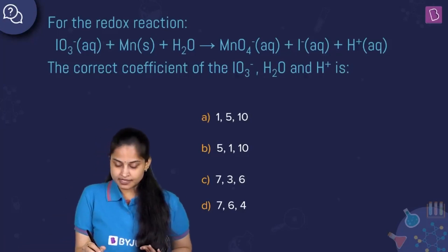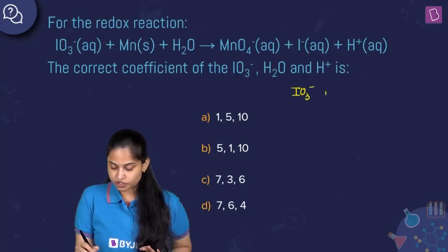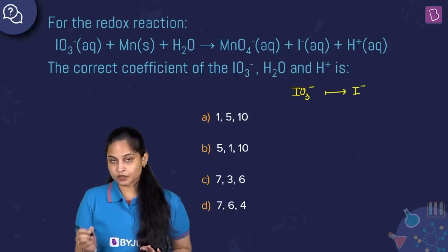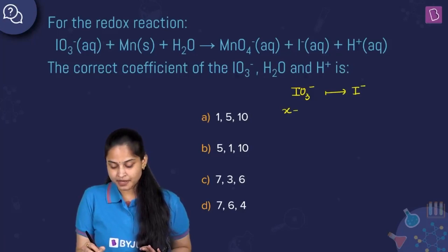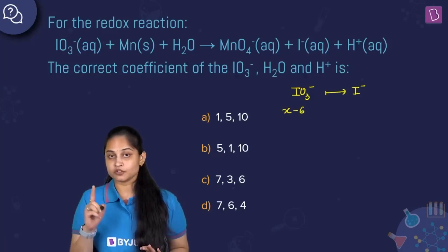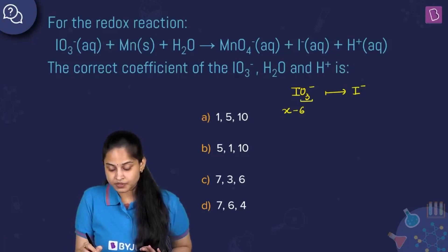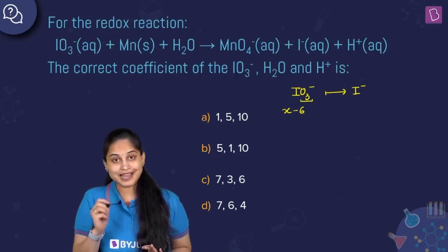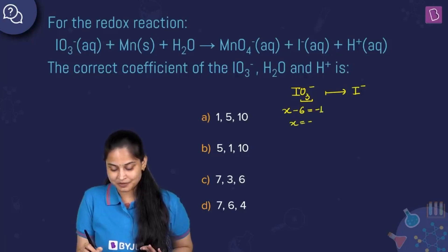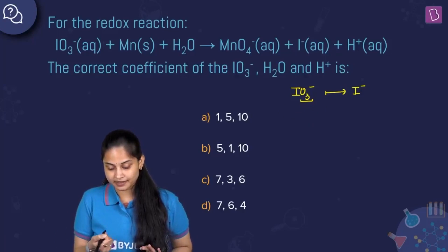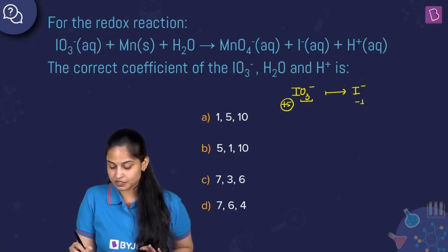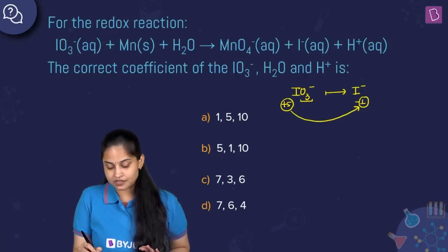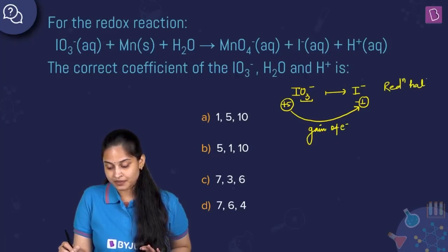For IO₃⁻ changing to iodide ion, the oxidation number of iodine: x minus 6 equals minus 1 (since three oxygen atoms each with −2 gives −6), so x equals +5. The oxidation number of iodine in iodate ion is +5, and in the product it is −1. It changes from +5 to −1, meaning gain of electrons — this is the reduction half reaction.